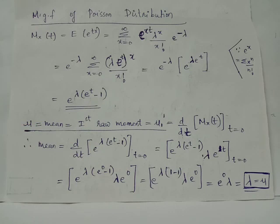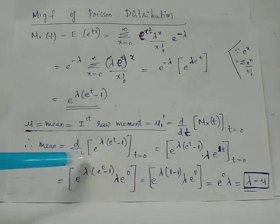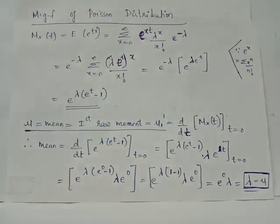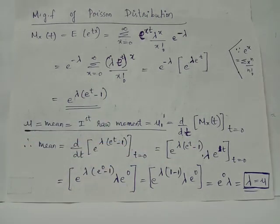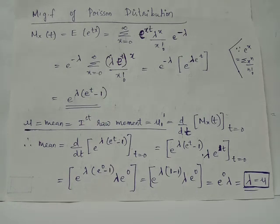So we have the first order differentiation of this expression with respect to t obtained like this, and we evaluate at t equals 0. Wherever e raised to t appears it becomes e raised to 0 which equals 1.